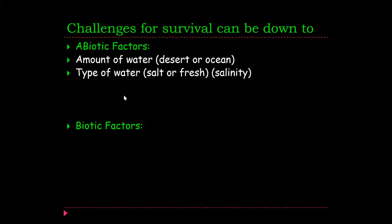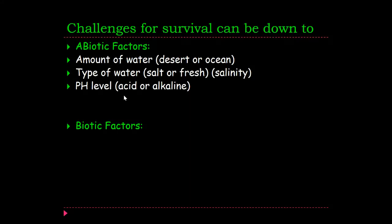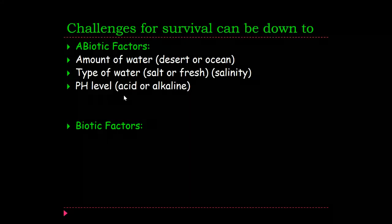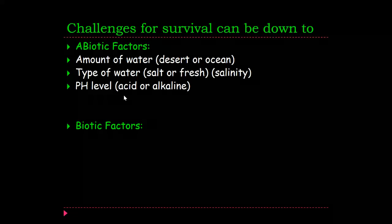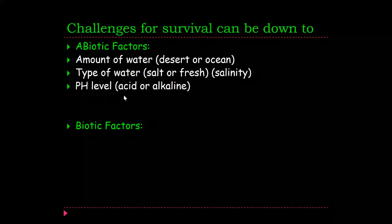pH level — whether something is in an acidic environment, like worms in acidic soil, for example — or an alkali, which is the opposite to an acid. Detergent and washing powder are examples of alkali, so soapy materials or substances.